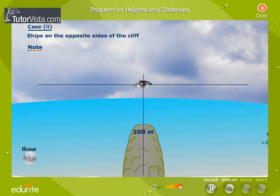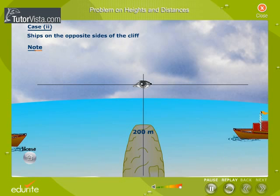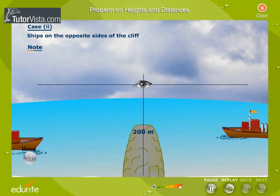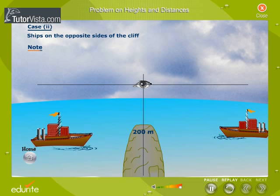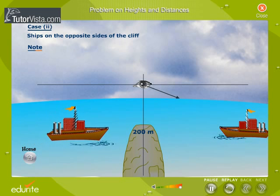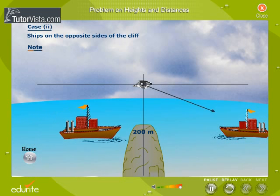The second case: when ships are on the opposite sides of the cliff. Calculate the distance between the ships.